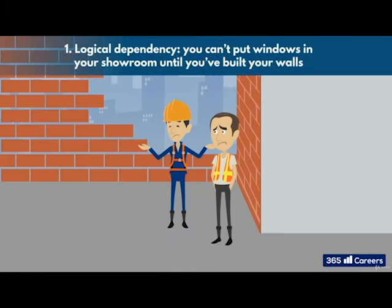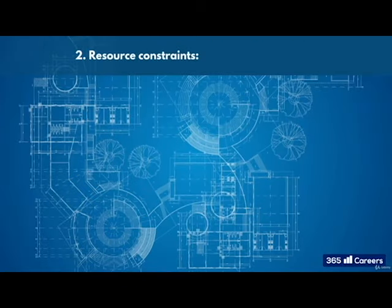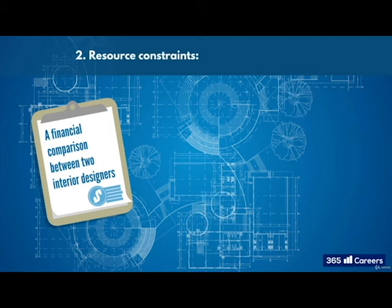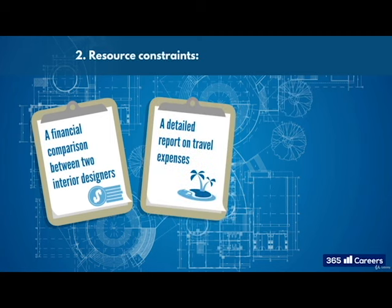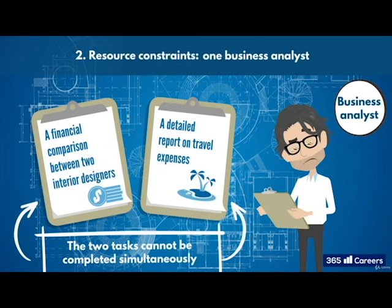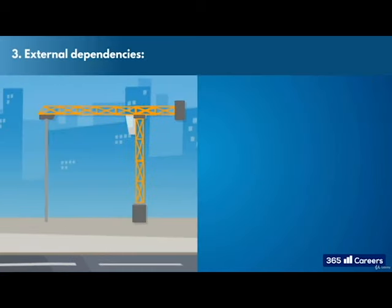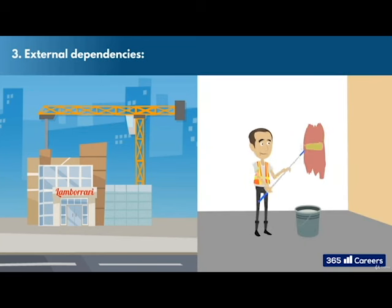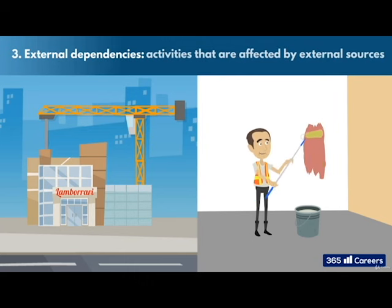First, logical dependency. This is just like what I described. You can't put windows in your showroom until you've built walls. Second, we've got resource constraints. Lack of resources can affect the sequencing of tasks. Let's say you have two work packages as part of your showroom project. One for performing a financial comparison between two potential interior designers, and another for preparing a detailed report on travel expenses. But you only have one business analyst, and nobody else qualified to perform the tasks. The two tasks cannot be completed simultaneously. Therefore, your business analyst has to finish one before they can start the other. Third, we have external dependencies. These can be anything from building work that needs to be signed off by the city, to paintwork that can only be done in good weather. You get it. The activities that are affected by external sources.